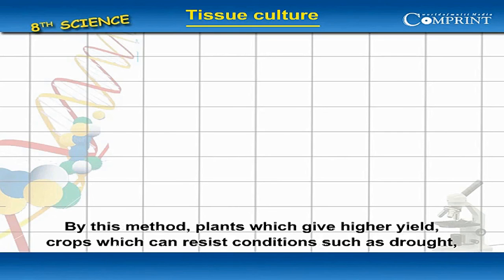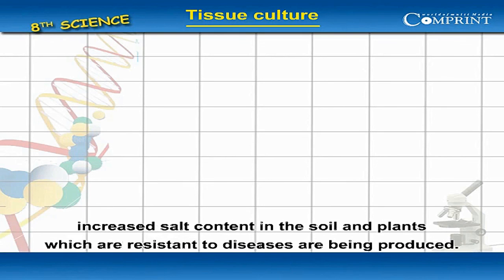By this method, plants which give higher yield, crops which can resist conditions such as drought and increased salt content in the soil, and plants which are resistant to diseases are being produced.